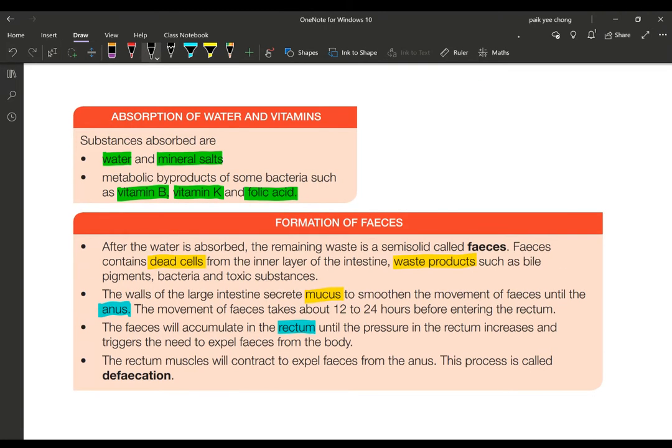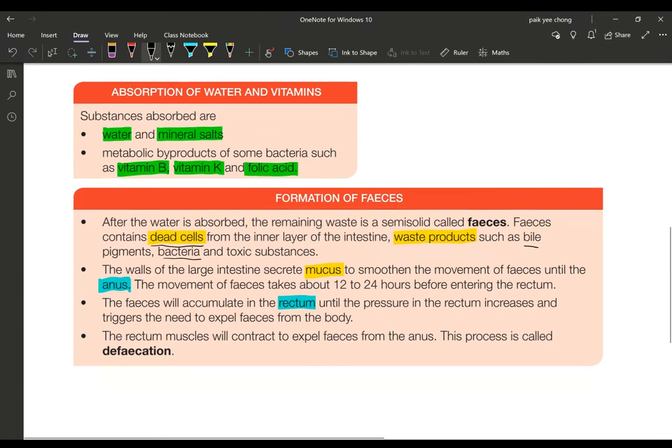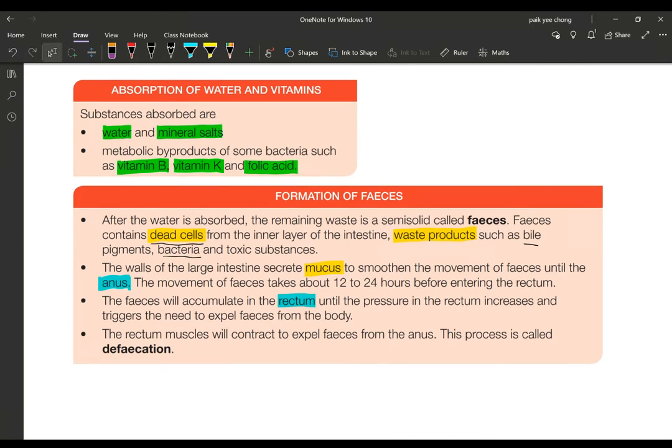About formation of feces: as the water is absorbed, the waste becomes more and more solid. The feces will contain dead cells from the inner layer of the intestines, waste products such as bile from the liver, the bile pigments, bacteria, and toxic substances. On the walls of the large intestines, mucus will be secreted to smooth the movement of feces until it moves right down to the anus.